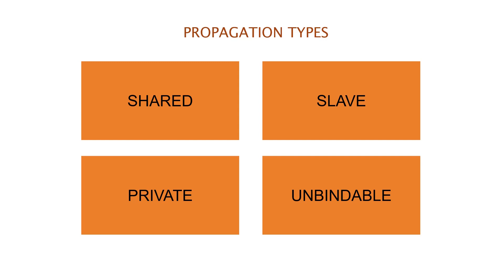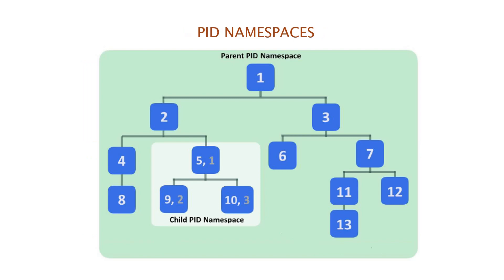With mount propagation, for example, an optical disk device that is mounted in the master namespace can be automatically seen in its slave namespaces. PID namespaces isolate the process ID number space. In other words, processes in different PID namespaces can have the same PID.